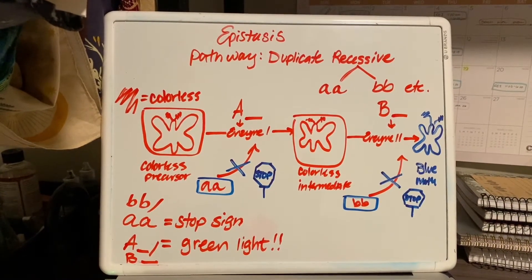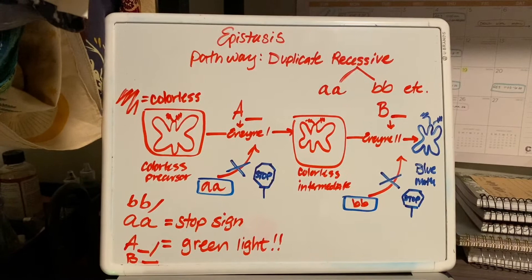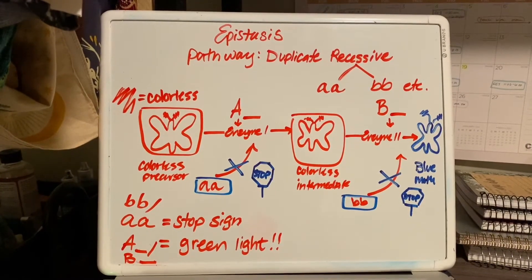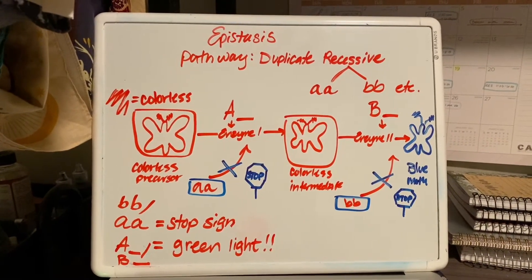But if you have big A little a or big A big A, enzyme 1 is activated, and that just leads you to the colorless intermediate.